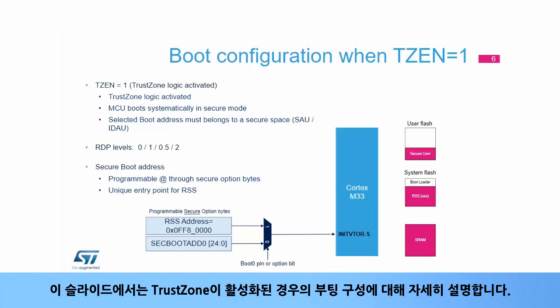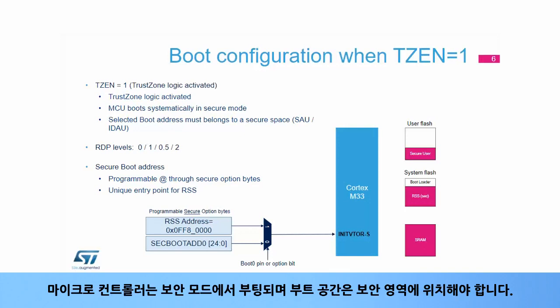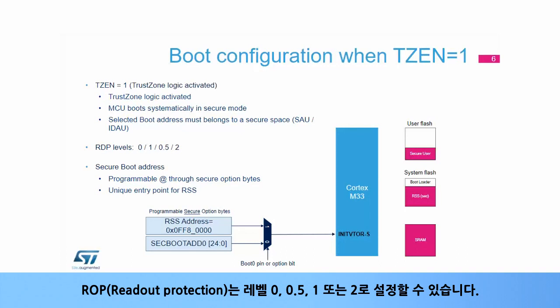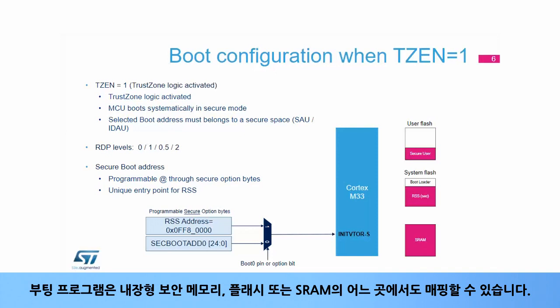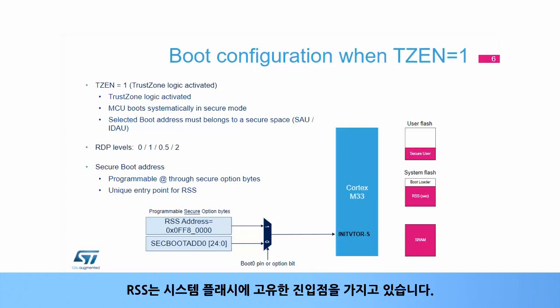This slide details the boot configuration when TrustZone is enabled. The microcontroller boots in secure mode and the boot space must be located in the secure area. The readout protection can be set to levels 0, 0.5, 1, or 2. The boot address is programmable through secure option bytes. The boot program can be mapped anywhere in the internal secure memories, flash or SRAM. The RSS has a unique entry point in system flash.